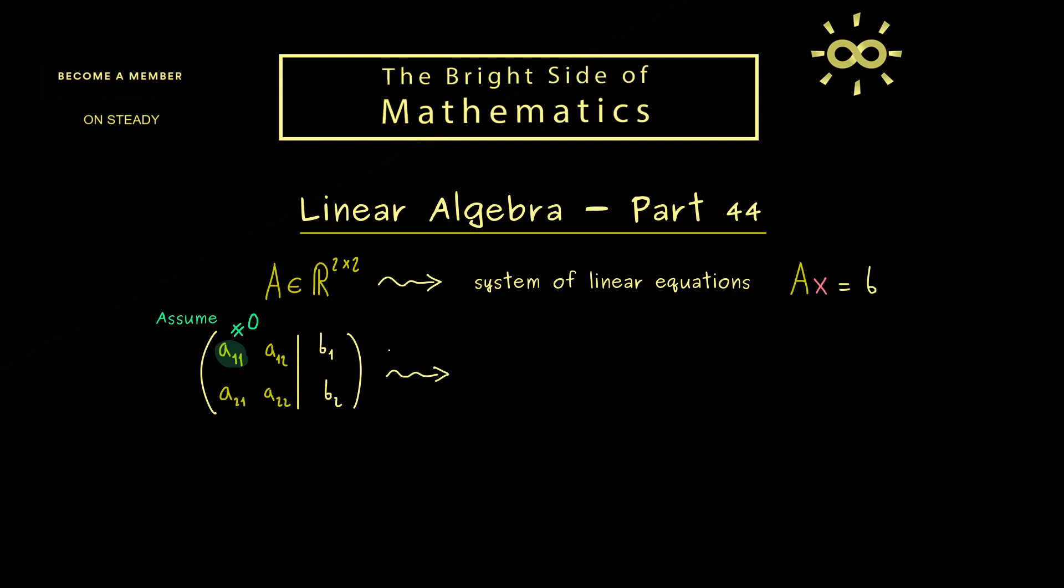And then we already know a11 is our first pivot and we can eliminate this element here in the first step of the Gaussian elimination. And this one we can simply describe as take the second row and subtract a21 divided by a11 times the first row. So you know this is how it works. We don't change the first row but we change the second row.